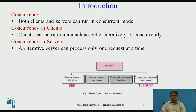Both clients and servers can run in concurrent mode. Clients can run on a machine either iteratively or concurrently. Running clients iteratively means running them one by one — one client must start, run, and terminate before another can start. Most computers today allow concurrent clients, meaning two or more clients can run at the same time.